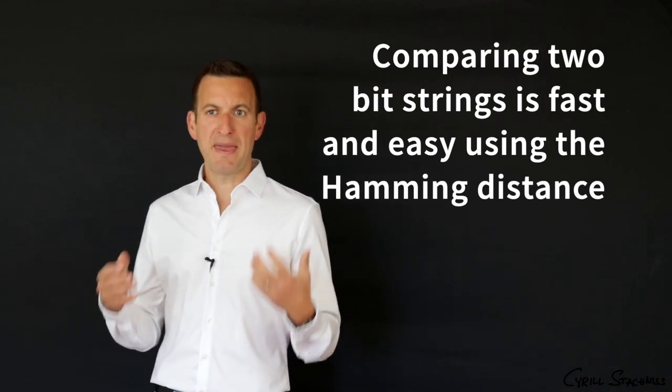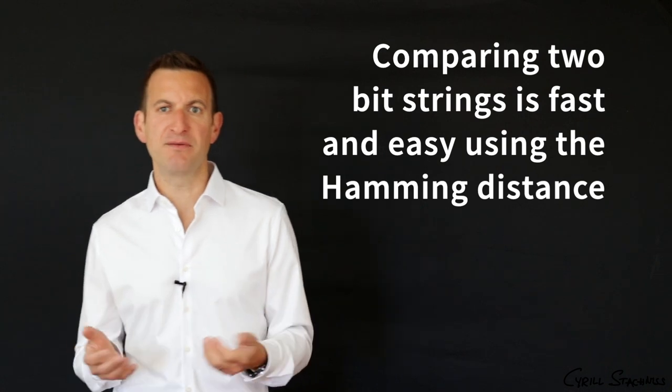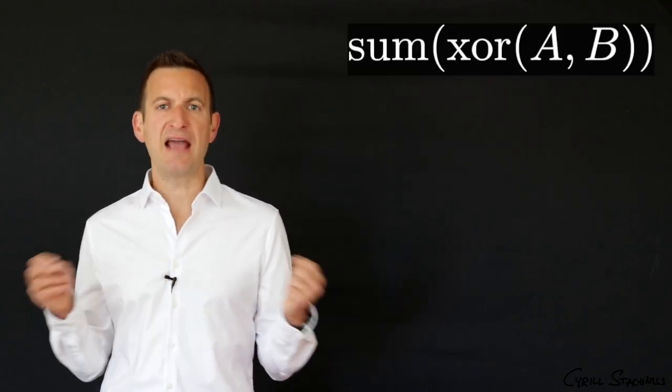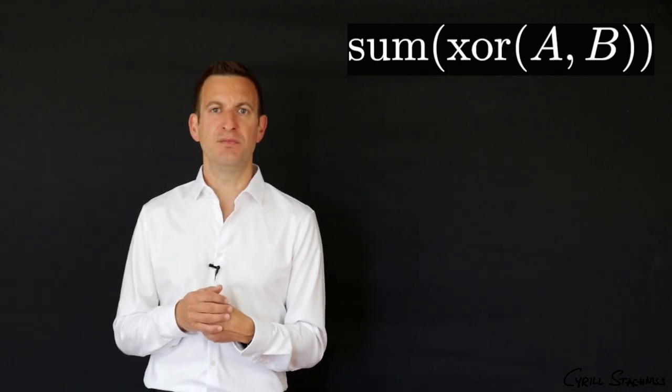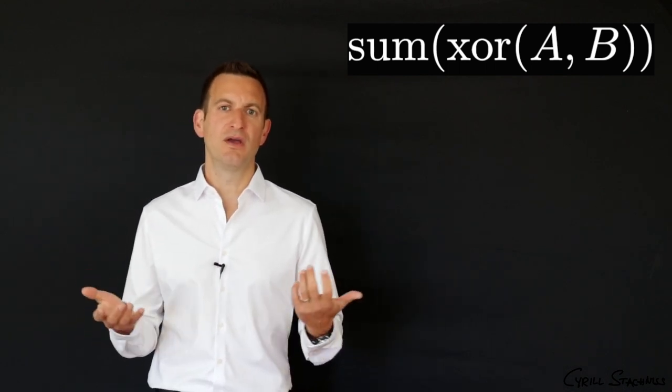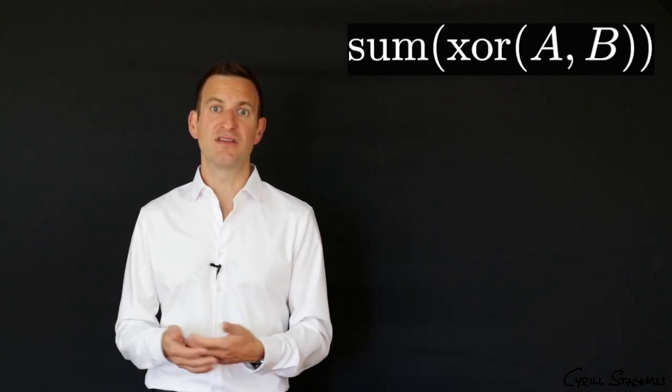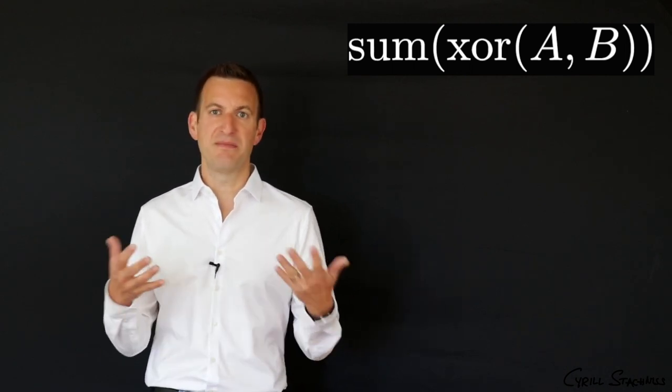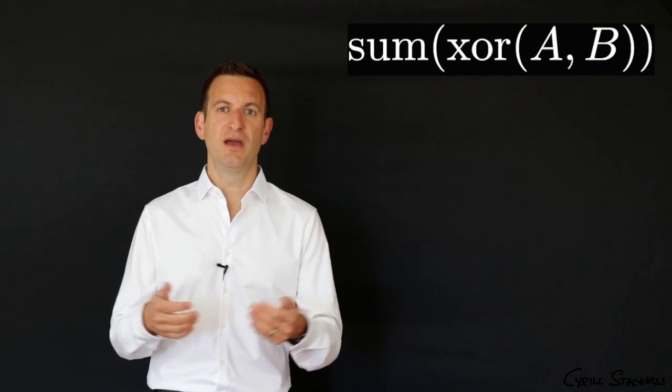If you now want to compare two bit strings A and B, for example, that can be done in a very simplistic fashion, by just computing the XOR operation over those two bit strings and count the numbers of ones, and this gives you a distance, the larger distance, the further those descriptors differ, and that's very fast to do and very handy.